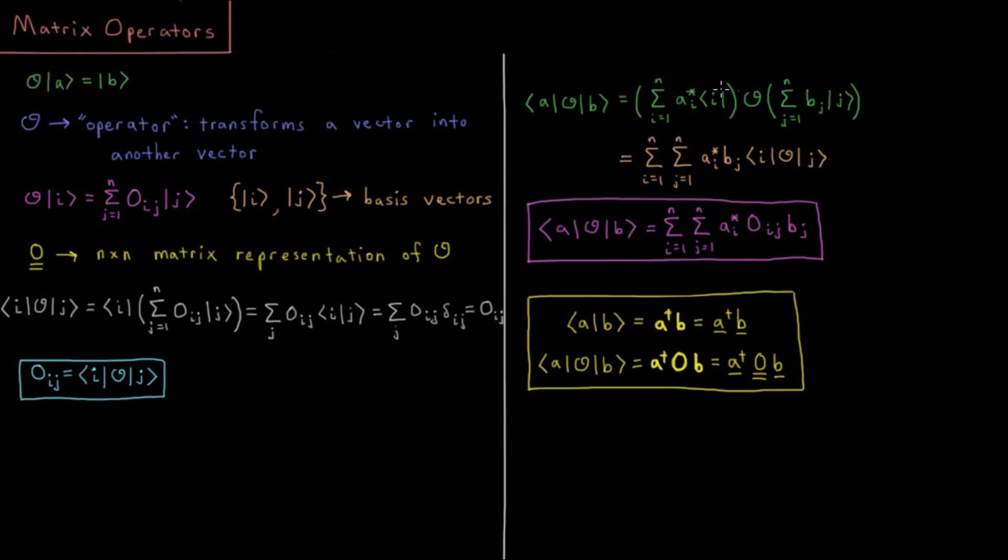We can factor out both of the sums. We have a sum from i equals 1 to n, sum j equals 1 to n of a star i, complex conjugate of the i-th coefficient of a, times b sub j, the j-th coefficient of ket vector b. And then we have just the matrix element left over of i, o, j that we computed earlier.